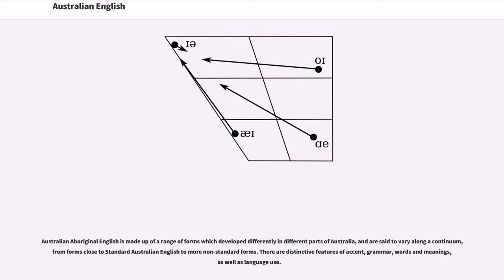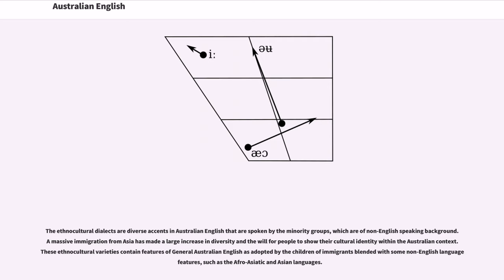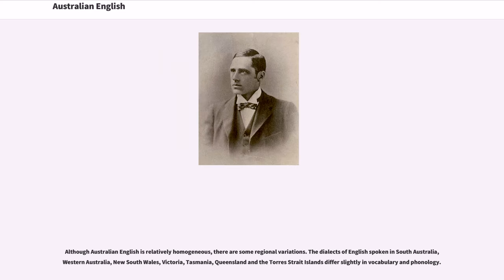The ethno-cultural dialects are diverse accents in Australian English that are spoken by the minority groups, which are of non-English speaking background. A massive immigration from Asia has made a large increase in diversity and the will for people to show their cultural identity within the Australian context. These ethno-cultural varieties contain features of general Australian English as adopted by the children of immigrants blended with some non-English language features, such as the Afro-Asiatic and Asian languages.